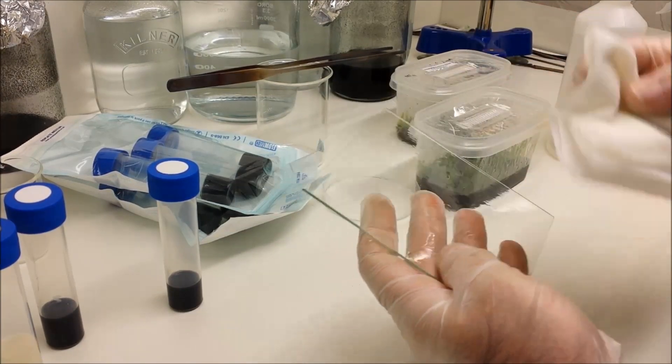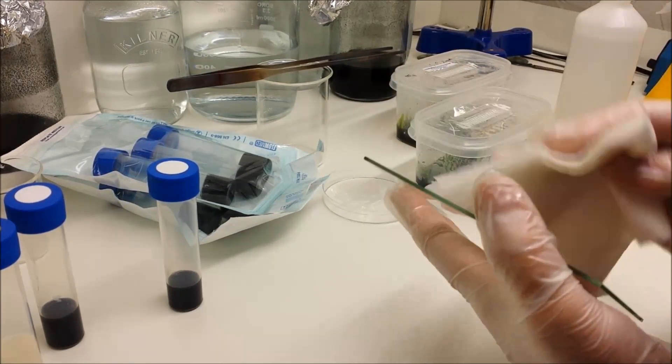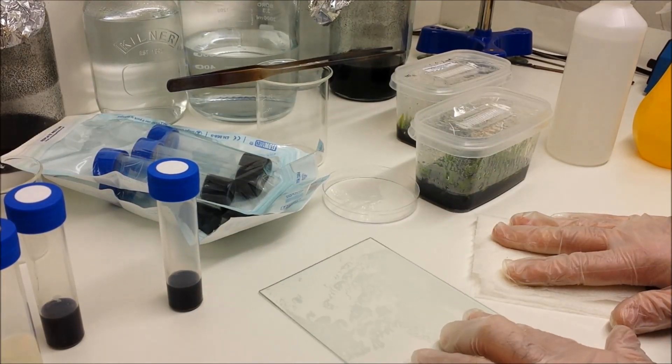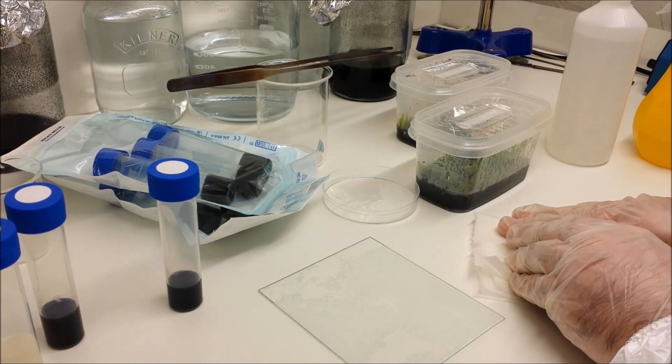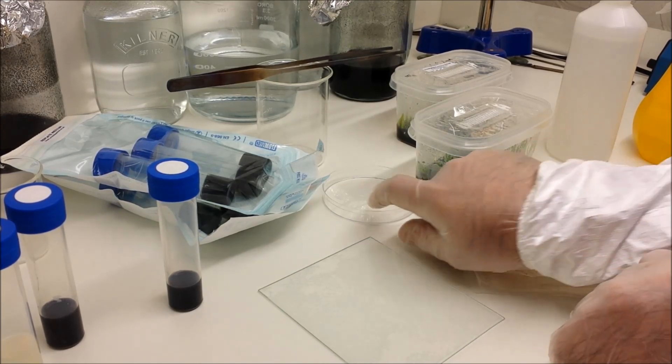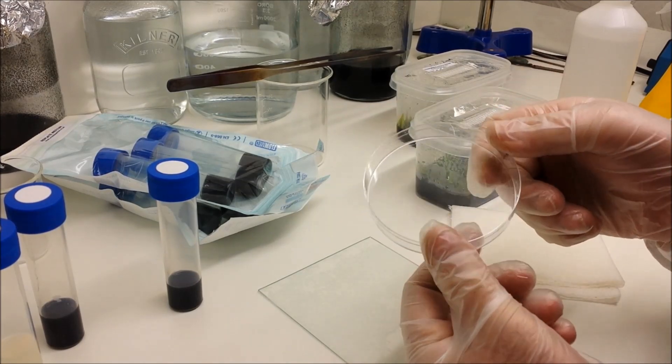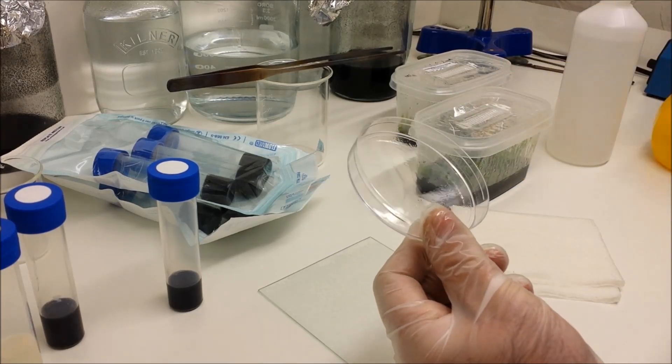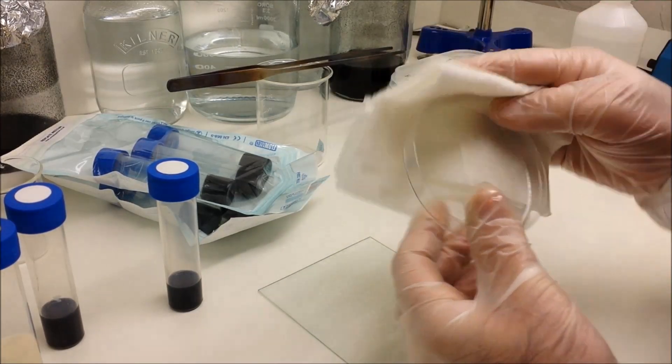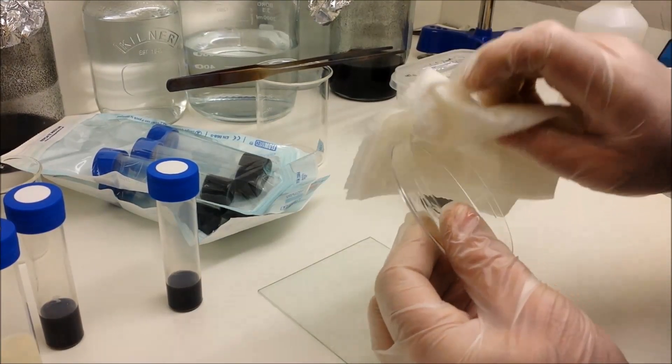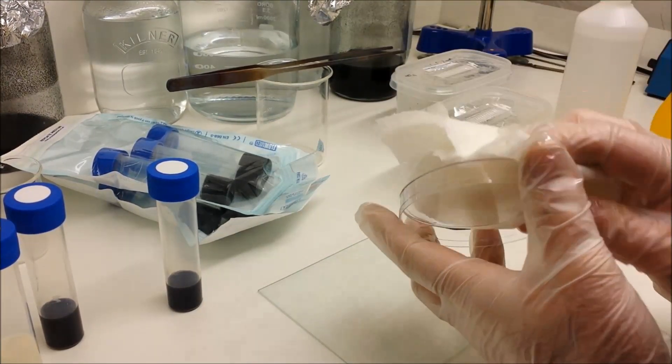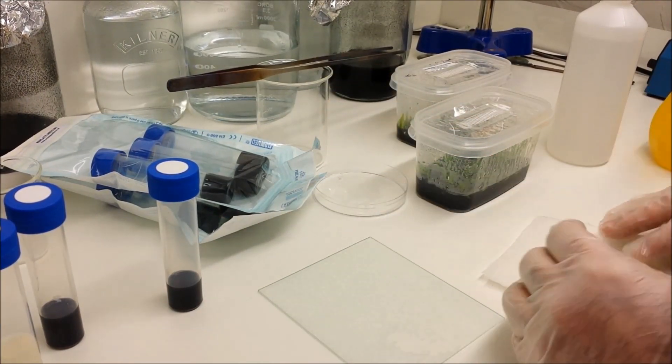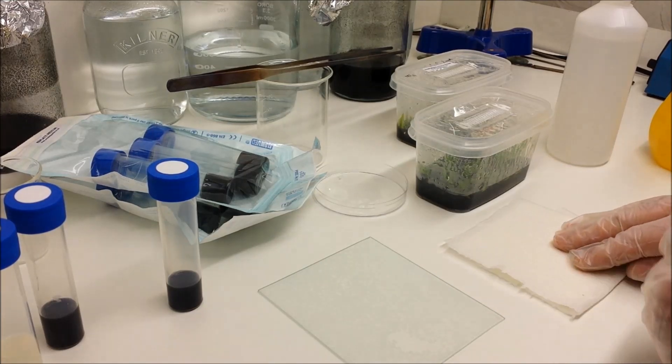What you could use instead of a glass sheet is some of the disposable petri dishes, which are pretty cheap. But again, what you need to do is sterilize it by spraying with isopropyl alcohol IPA, giving it a good wipe down—top, bottom, sides, everywhere. Put your cloth back down.